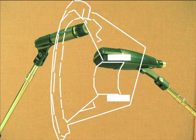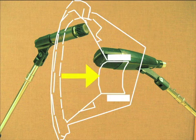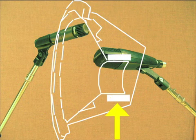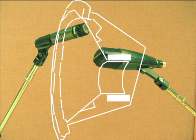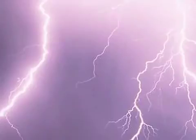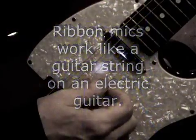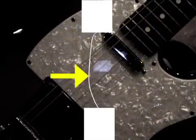The sound pressure moves the diaphragm, which pushes the coil through a magnetic field and generates electricity. Ribbon mics work more like a guitar string on an electric guitar, in that the vibration of the ribbon itself over the magnet generates the electricity.